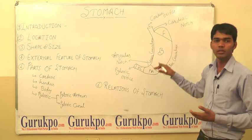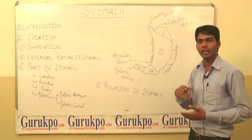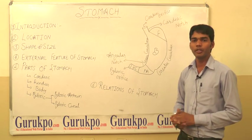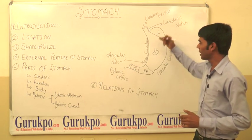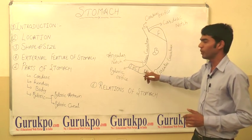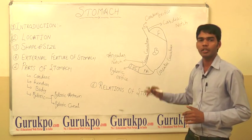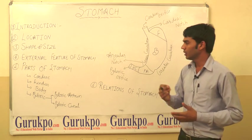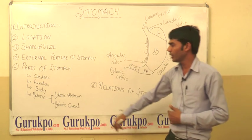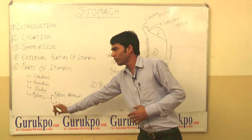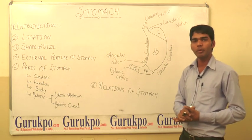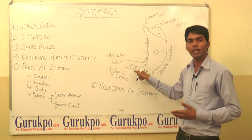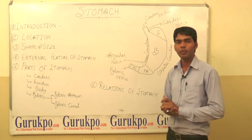The next part is the body part, which is situated between the fundus part and the pyloric antrum part. The body part has the gastric glands. Next is the pyloric part, which is divided into the pyloric antrum part and the pyloric canal part.